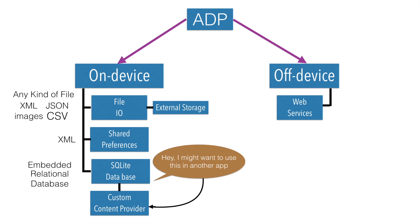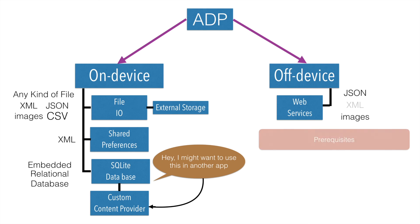In the case of web services, the data types you typically see are JSON, XML, and images — essentially any kind of file you want to receive from the backend. XML is very rarely used in mobile applications because parsing XML is considered much more resource-intensive than parsing JSON.